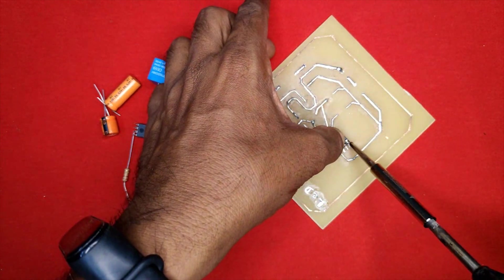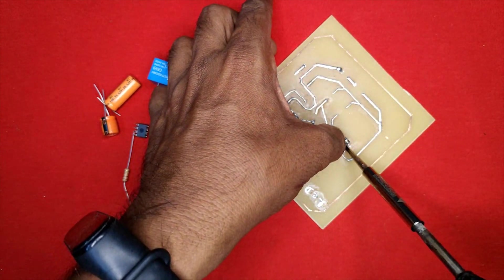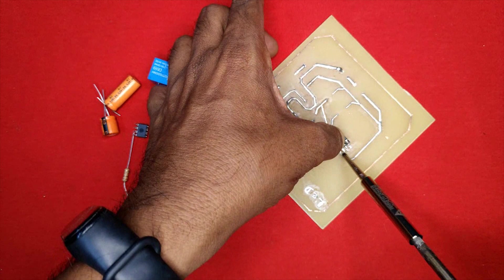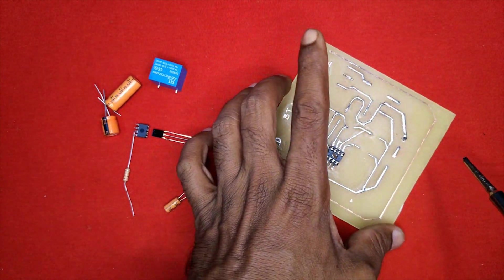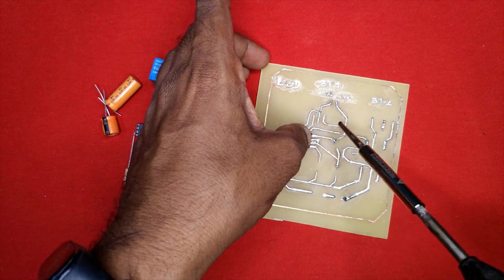IR receiver is the TSOP1738 sensor which detects the IR signal perfectly. When any of the keys is pressed once in the remote, the IR receiver picks up the IR signal.